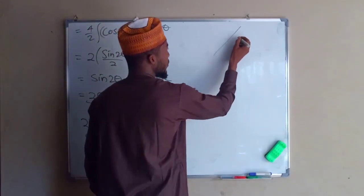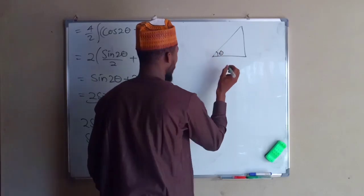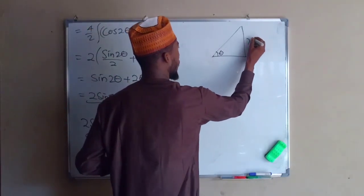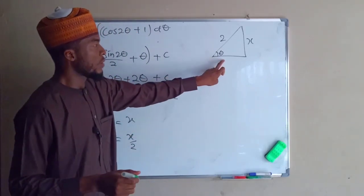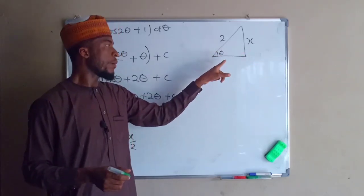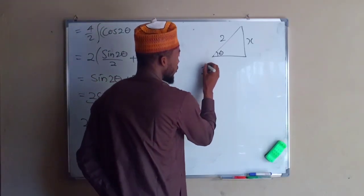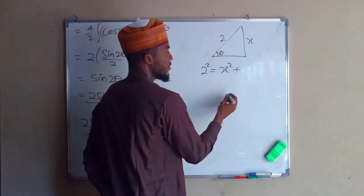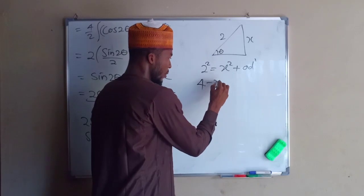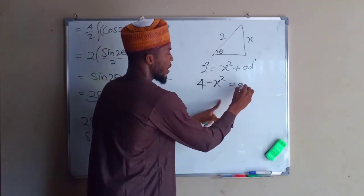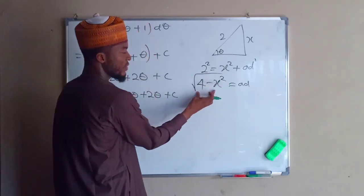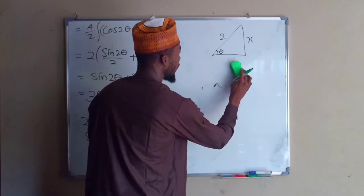From a right angle triangle, we can find cos theta. Since sin theta is the ratio of opposite to hypotenuse, x is the opposite and 2 is the hypotenuse. Using Pythagoras' theorem, hypotenuse squared equals opposite squared plus adjacent squared. So 4 equals x squared plus adjacent squared, giving adjacent squared equals 4 minus x squared. Taking the square root, the adjacent is the square root of 4 minus x squared.